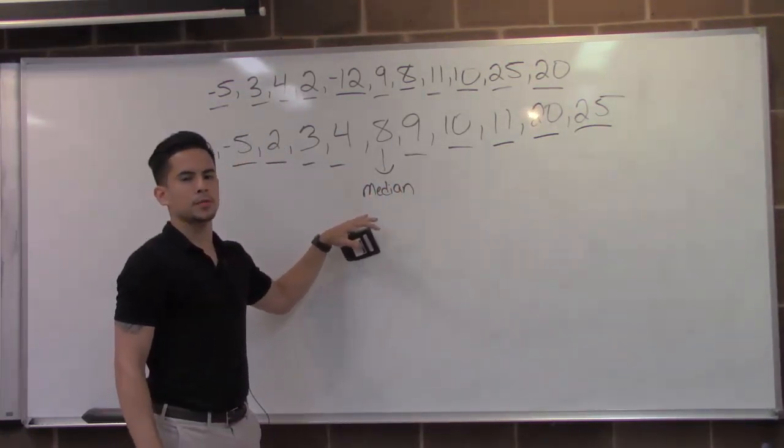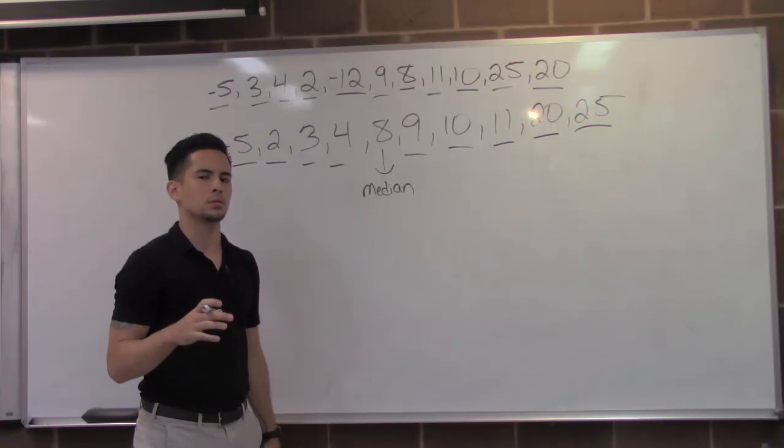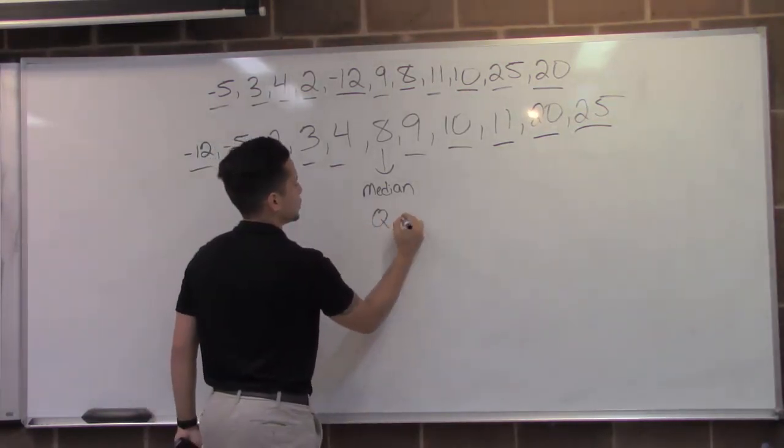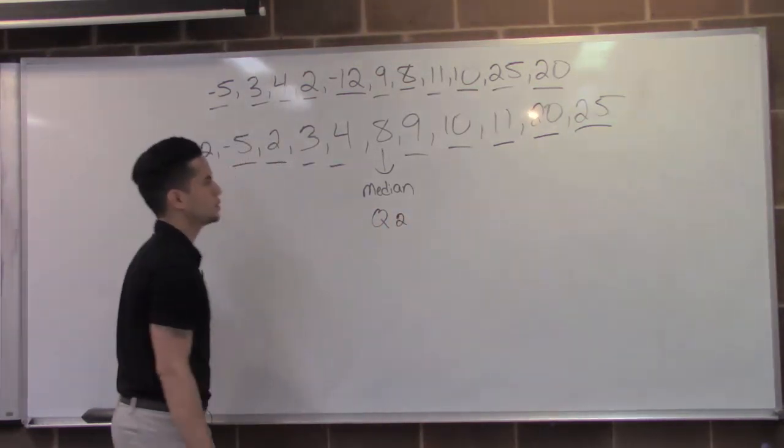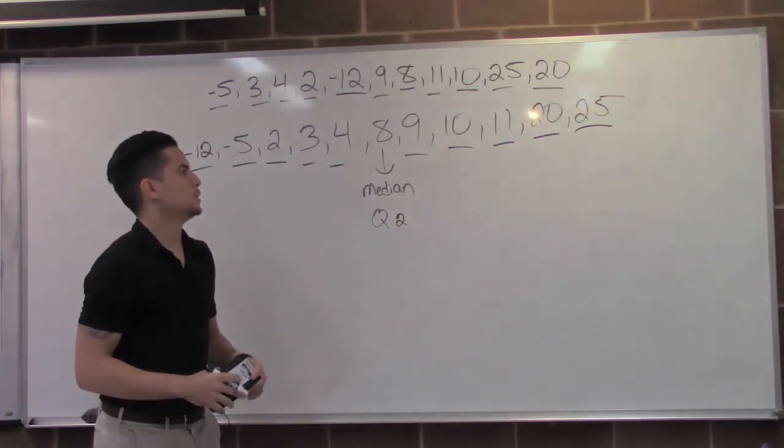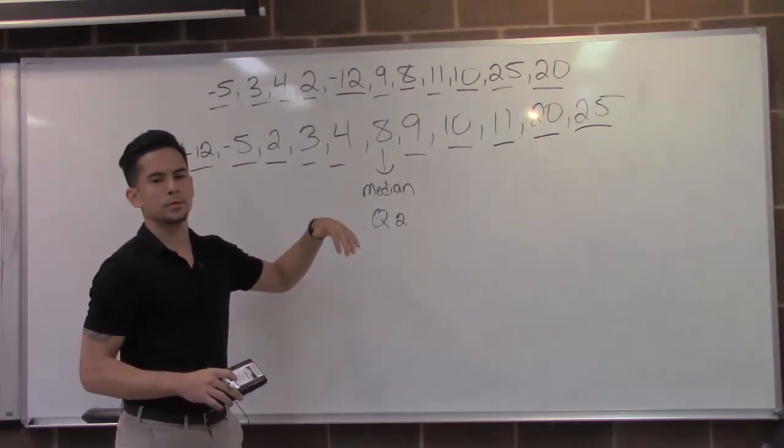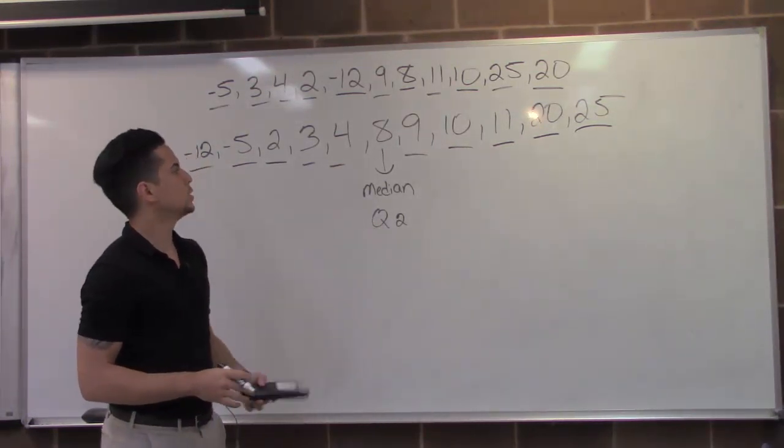And five number summary, our median is also going to represent quartile two. So I'm going to put Q2 underneath. Next, I'm going to find quartile three and one.